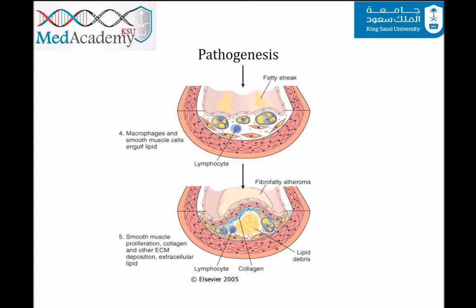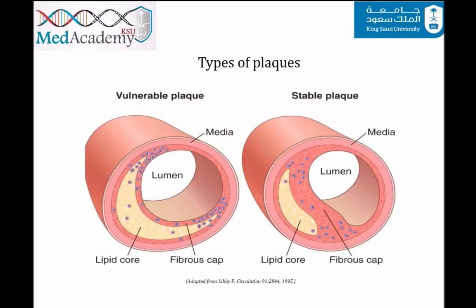Atherosclerotic plaques have three principal components: cells — including smooth muscle cells, macrophages, and T-cells; extracellular matrix — including collagen, elastic fibers, and proteoglycans; and intracellular and extracellular lipids.